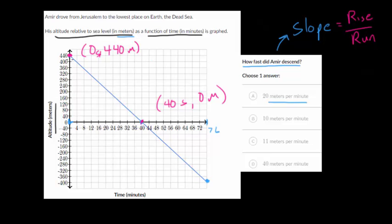Our rise, it looks like we're going down 440, and then our run, it looks like we're going over 40. So our slope here is going to be minus 440 divided by 40, and we can cancel a 0 out there. And 44 divided by 4 is 11. So you get minus 11 meters per minute.